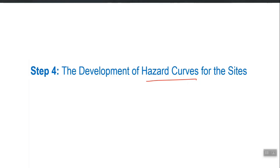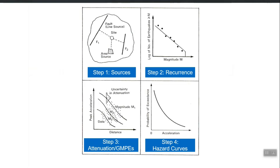I will quickly explain the basic principle. Steps one, two, and three are done — the M-R relationship for each source is constructed and the GMP to be used is selected. Now we have to use step 2 and step 3 to construct a new curve which is called the hazard curve.